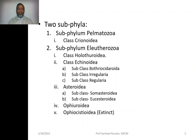Pelmatozoa has one class: Crinoidia. Eleutherozoa has classes: Holothuroidea, class Echinoidia, third Asteroidia, fourth Ophiuroidea, and fifth Ophiocystoidia.